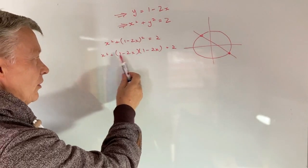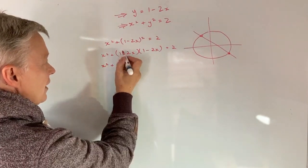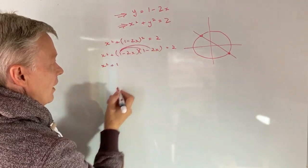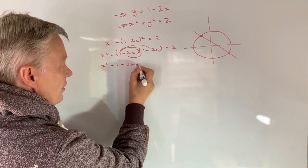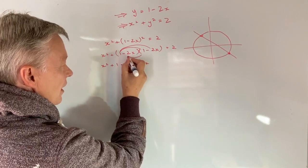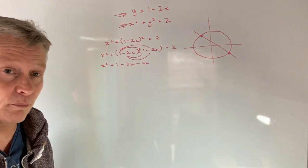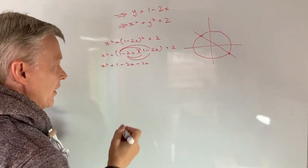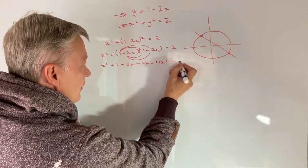So let's expand this out a little bit further. So I'm going to get x squared plus. So I've got 1 times 1 is 1. 1 times minus 2 is going to be minus 2x. Another minus 2x. And then don't forget a minus times a minus is a positive. So I've got plus 2x times 2x is plus 4x squared. That equals 2.